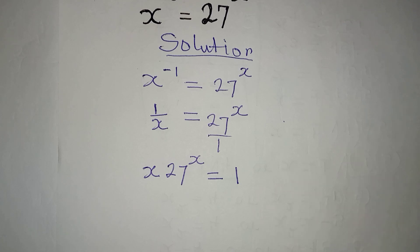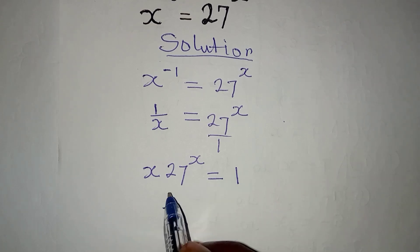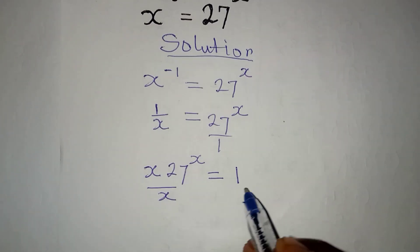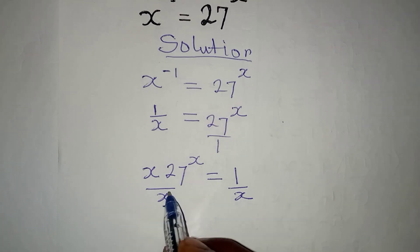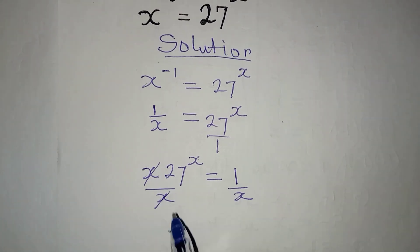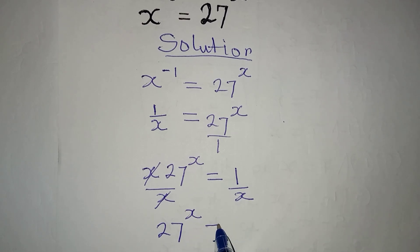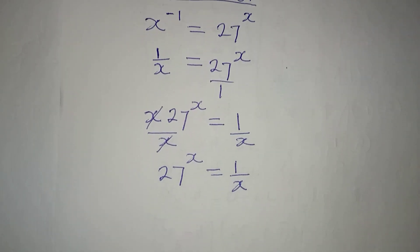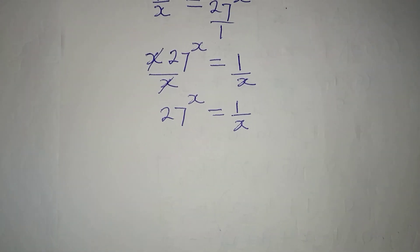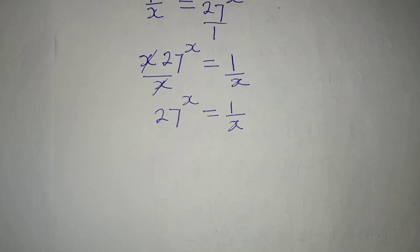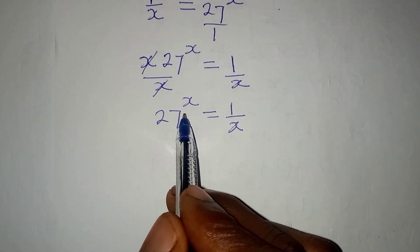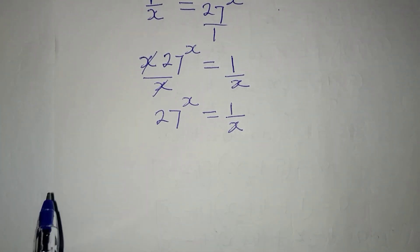From here, the next thing I'm going to do is divide both sides by x. Dividing by x, x cancels, and then we have 27 to the power of x to be equal to 1 over x.